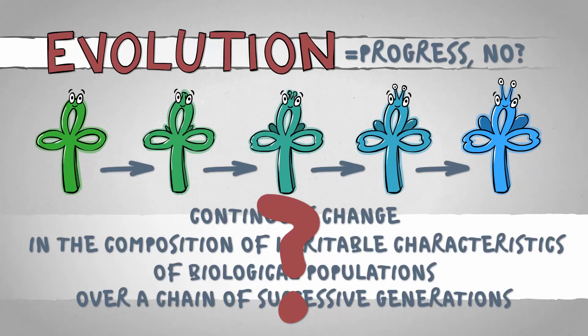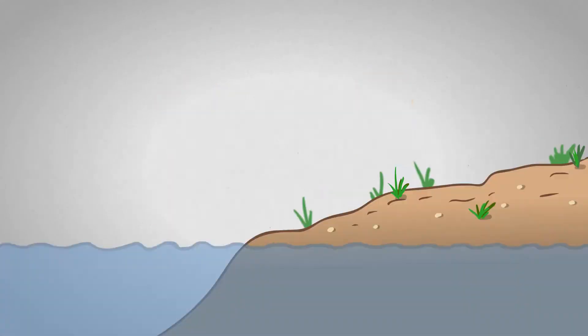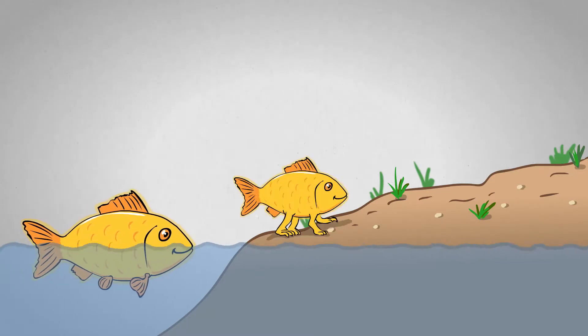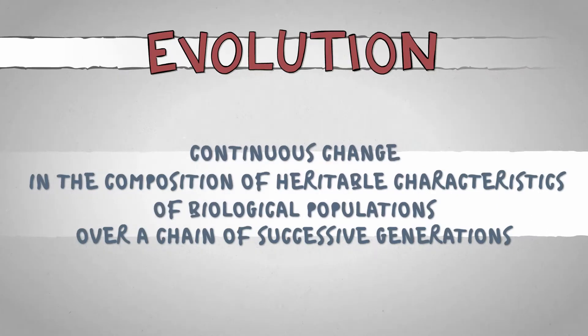Doesn't it mean some sort of progress? That monkey becomes man? And there's the dumb fish that swims ashore, grows legs, hawks and can suddenly run and breathe. Isn't that evolution? Well, almost. But no. Let's start at the beginning.